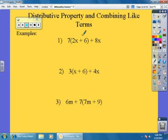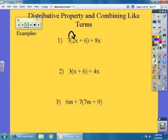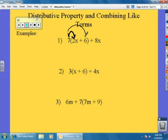You got to do distributive property first anytime you see it, so we're going to do 7 times 2x and 7 times 6. So 7 times 2 is like 7 groups of 2, so it's 14x. And you got to do 7 times 6, most people forget that.